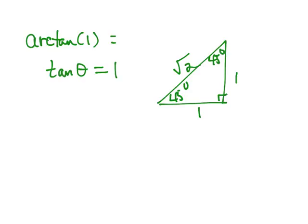And that means that theta would equal 45 degrees, and 45 degrees in radians is pi over 4, so the answer to the arctangent of 1 is pi over 4 radians.